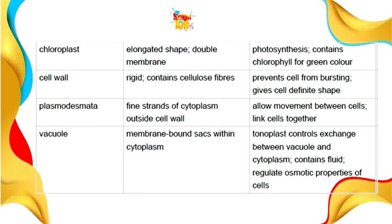In the chloroplast, photosynthesis takes place; it contains chlorophyll, which gives plants their green color. Plant cells have cell walls which prevent the cell from bursting and give the cell a defined rigid shape. Plasmodesmata allow movements between cells and link cells together. The vacuole controls exchange between the vacuole and the cell, and the tonoplast controls exchange between the vacuole and cytoplasm; it contains fluid and regulates the osmotic properties of cells.